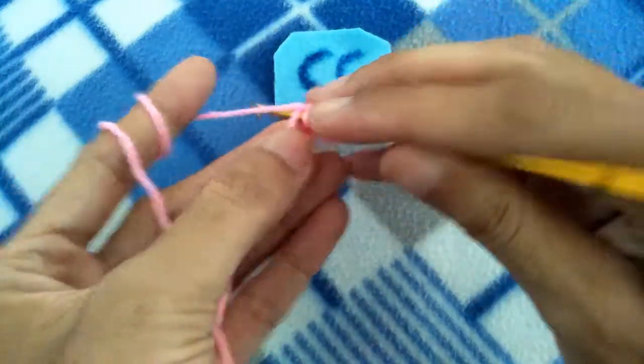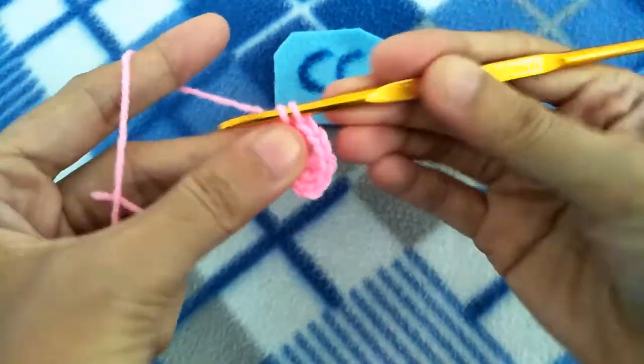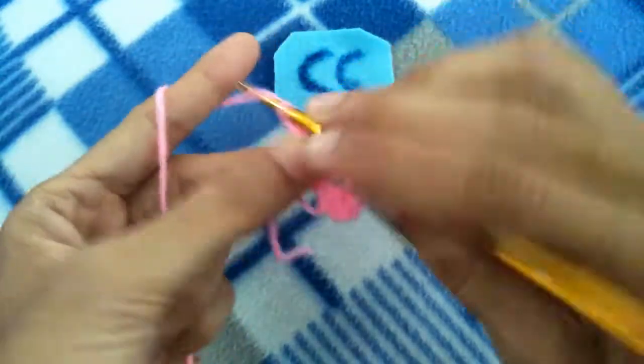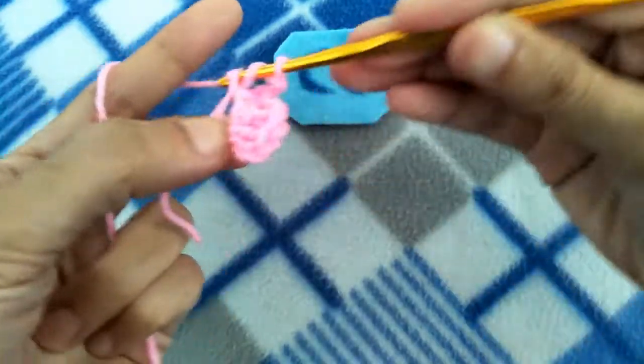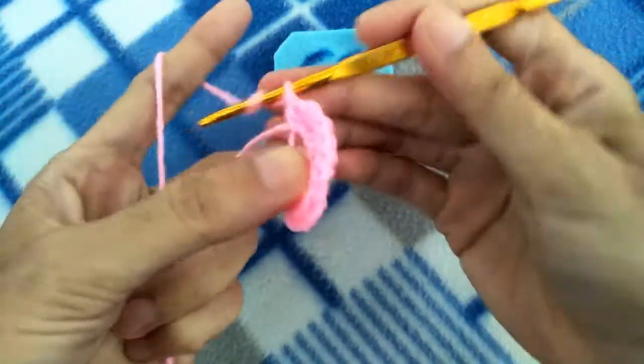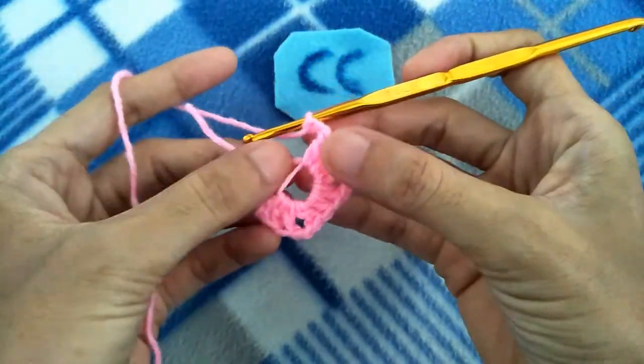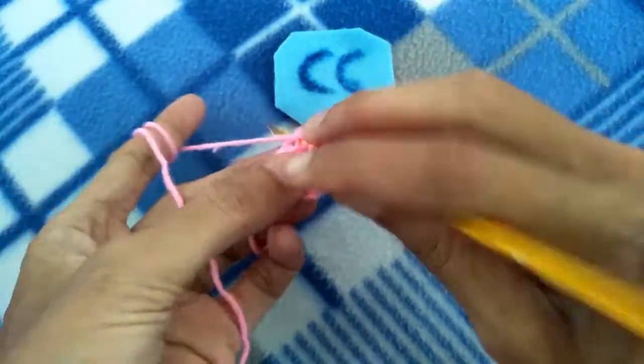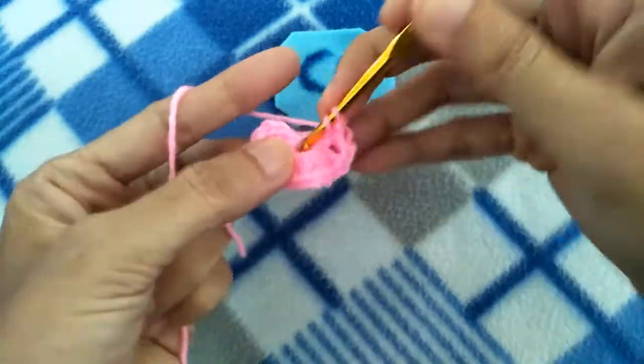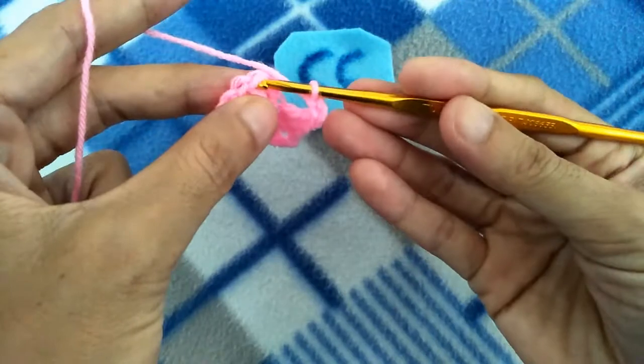Next, treble crochet, chain 2, treble crochet, and chain 2. Yarn over, then 3 double crochet and chain 2. Close the circle by slip stitching to the top of the second stitch.